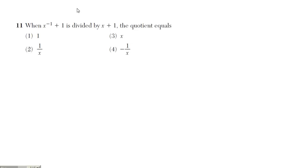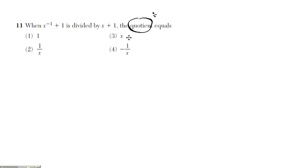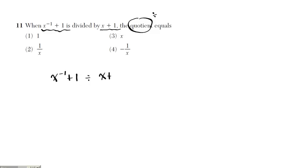Question 11. It says when x to the negative 1 plus 1 is divided by x plus 1, the quotient equals. One thing to remember: quotient means divide. So we're going to be dividing this by x plus 1. Before I divide, let me simplify this as much as possible. I'm going to simplify this and then divide it.